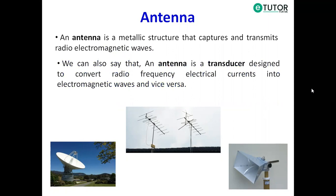That means when an antenna acts as a transmitter, it converts electrical signals into electromagnetic waves. And when an antenna acts as a receiver, it converts electromagnetic waves into electrical signals.